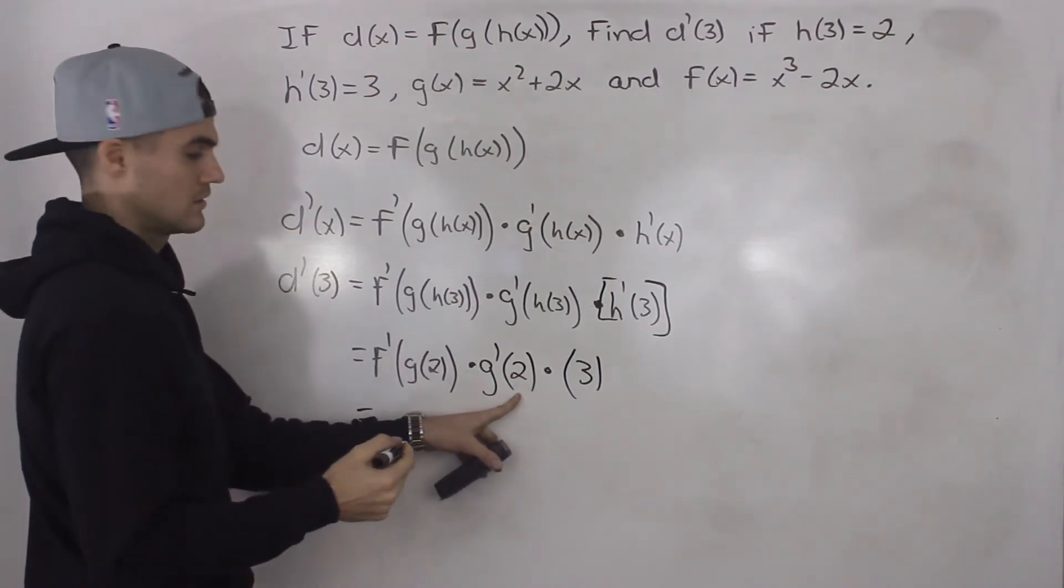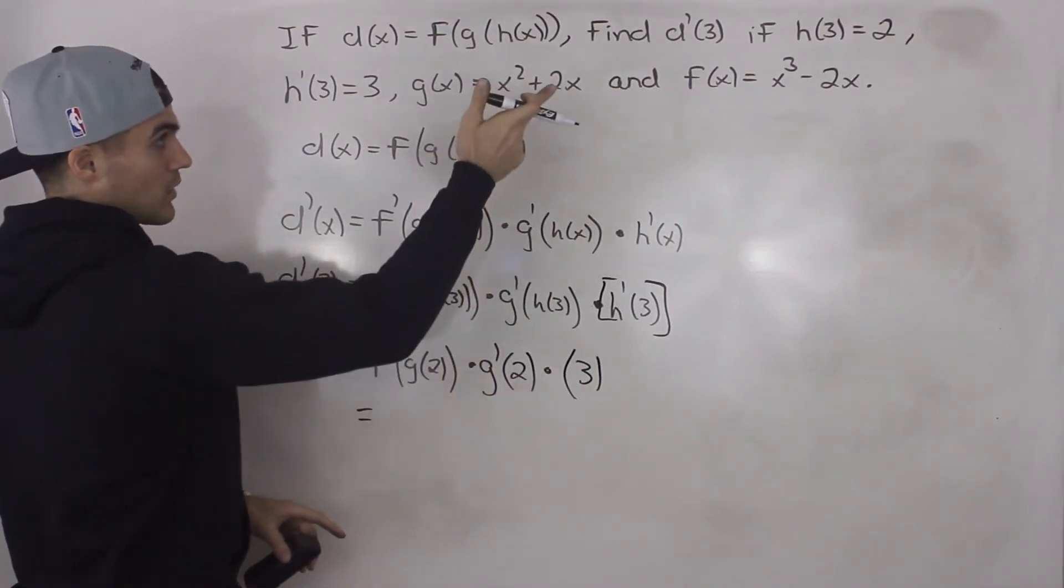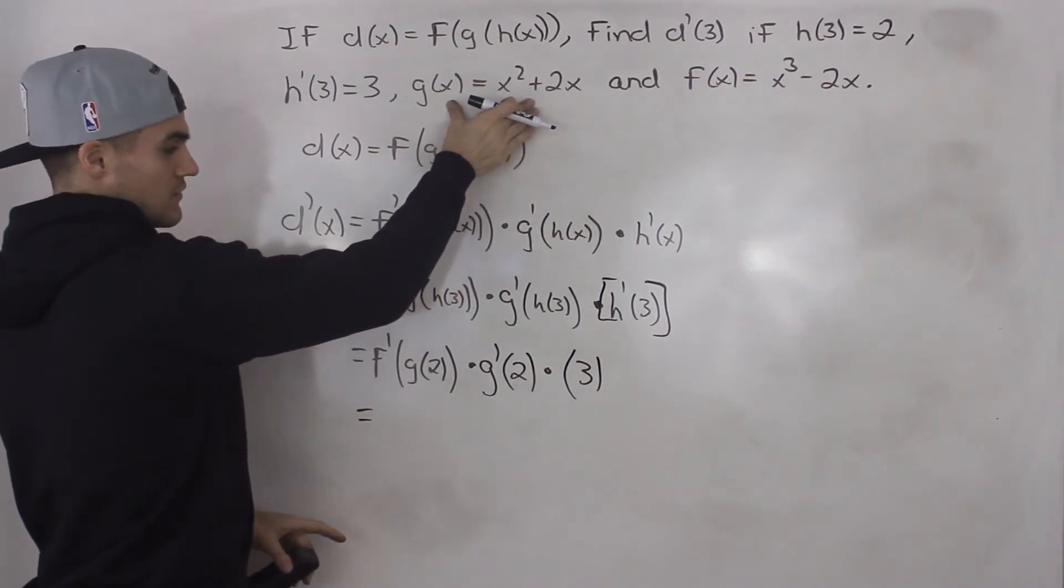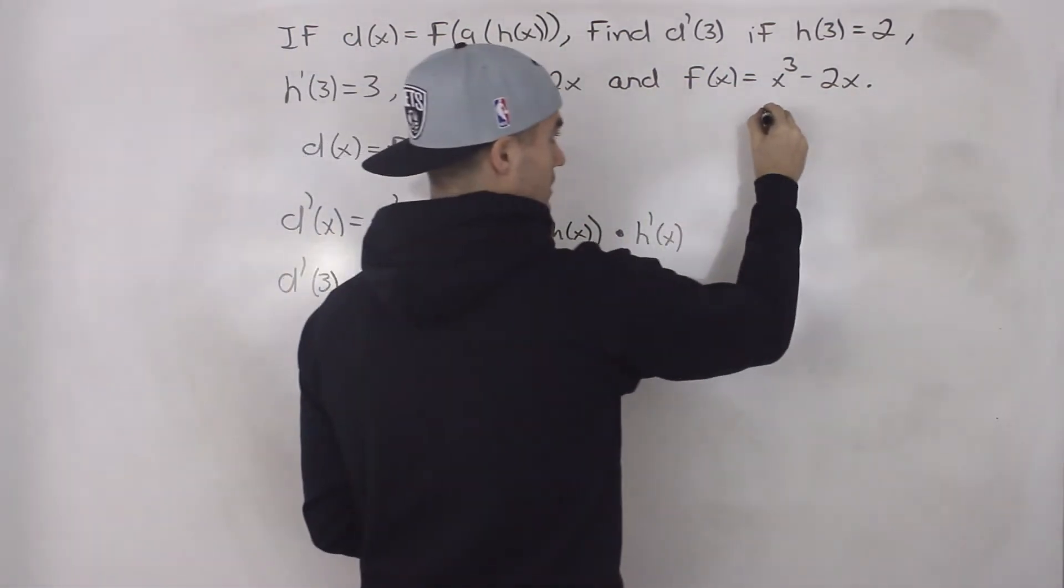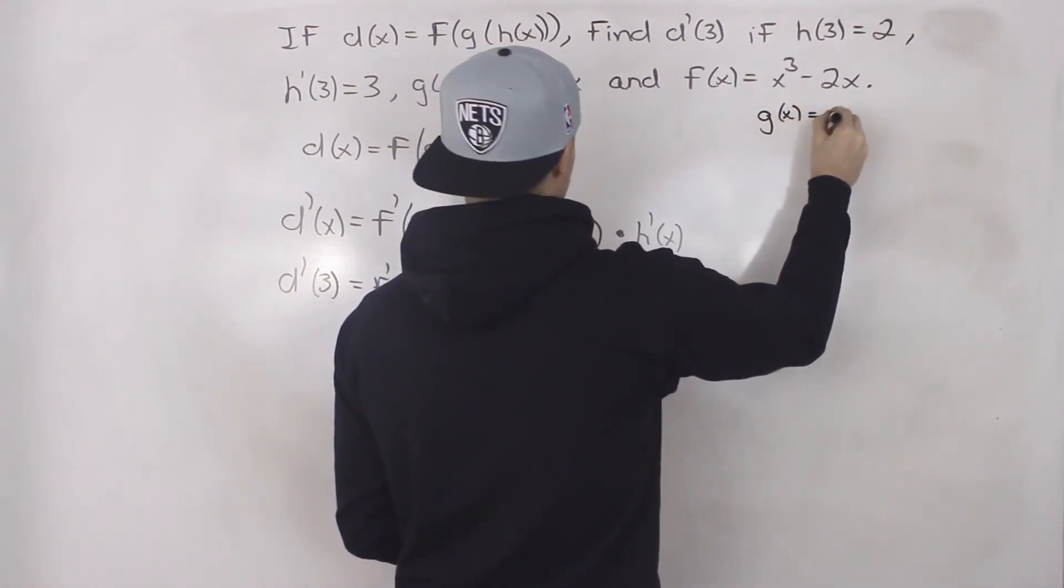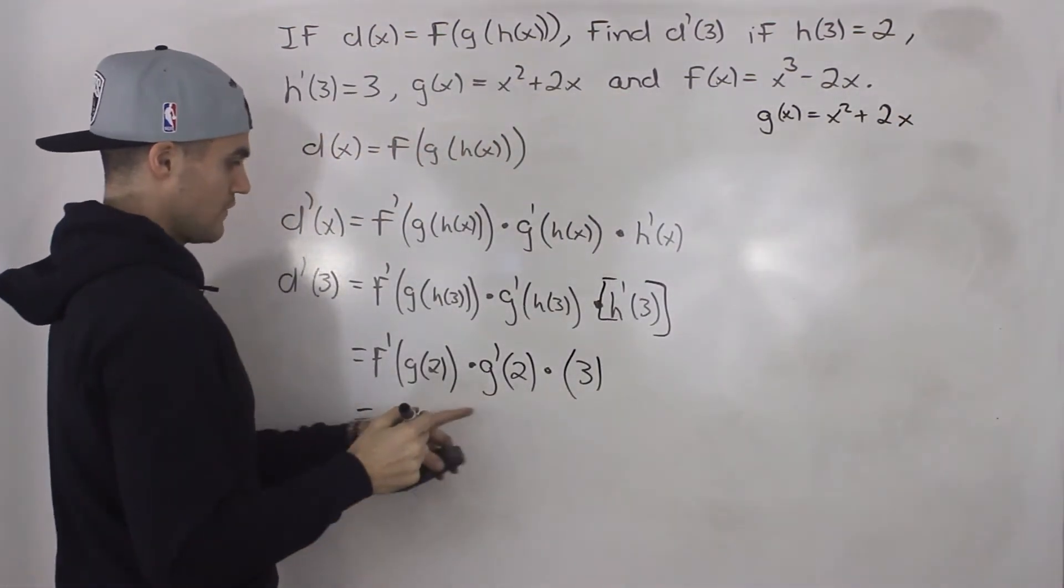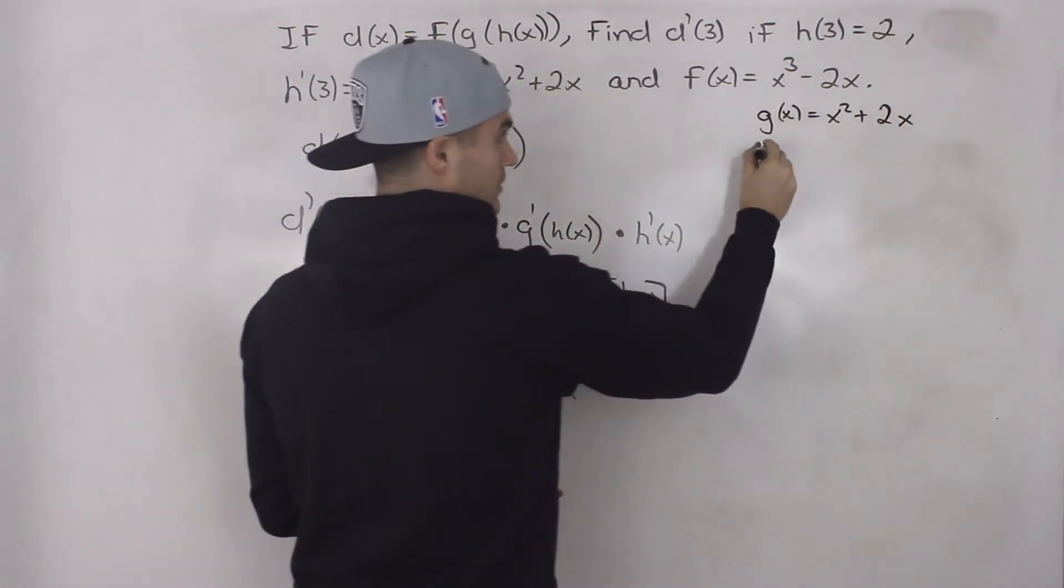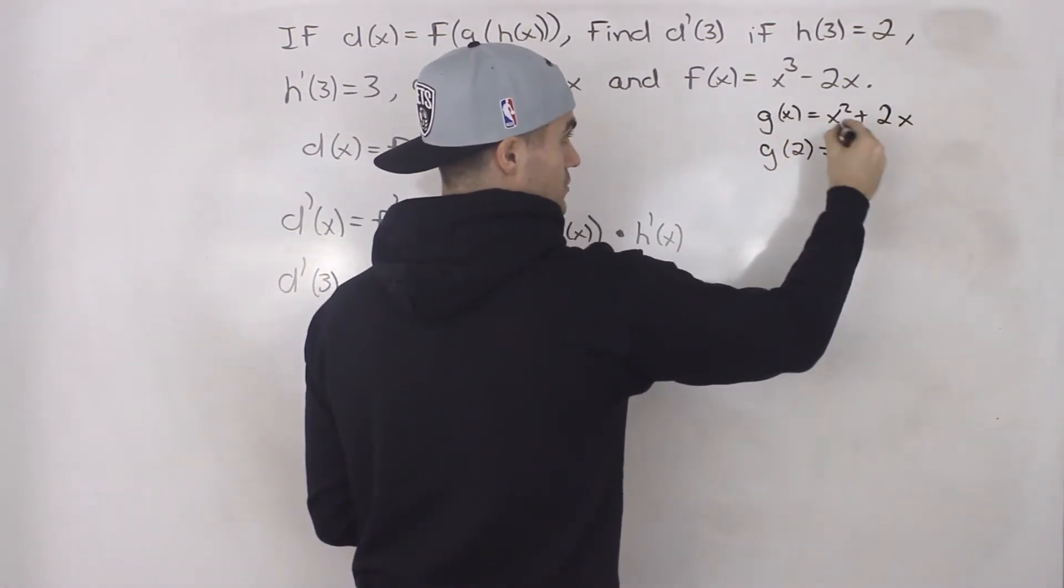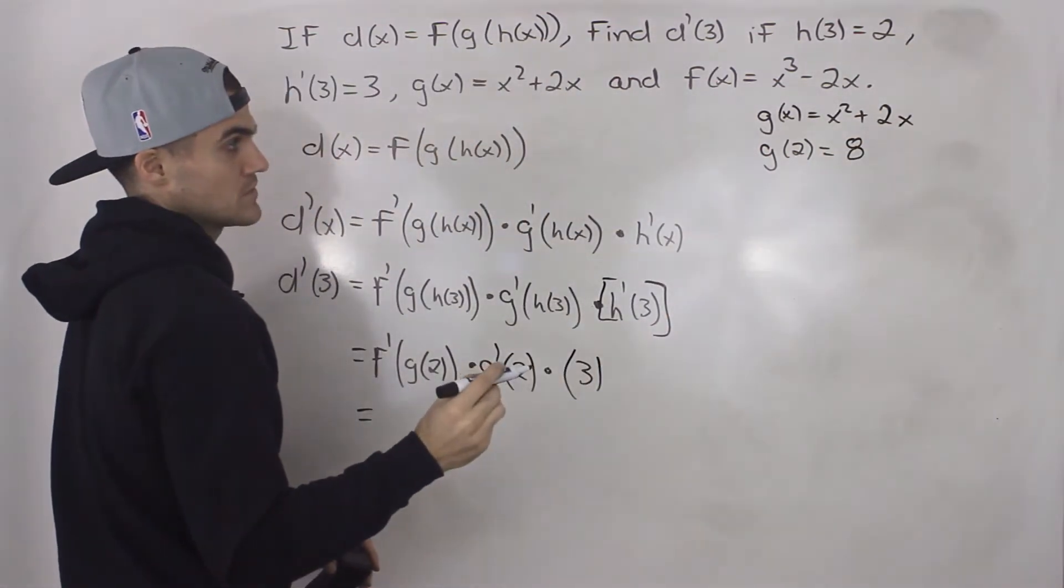Notice that we're not given those expressions as numbers directly like we were h of 3 h prime of 3, but we are given the function g of x. So we can work with this function on the side here. So if we have g of x equals x squared plus 2x, well, we can find what g of 2 is by just plugging in 2 for the x values in the function: 2 squared plus 2 times 2. That would be 4 plus 4, which would give us 8. So we know g of 2 is 8.